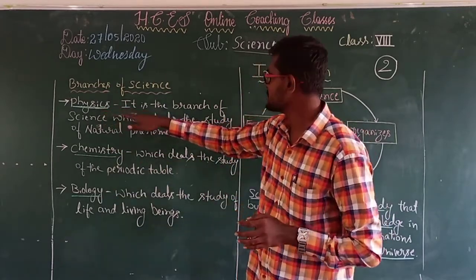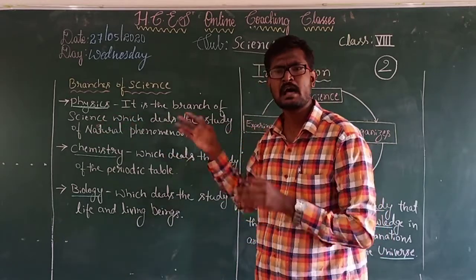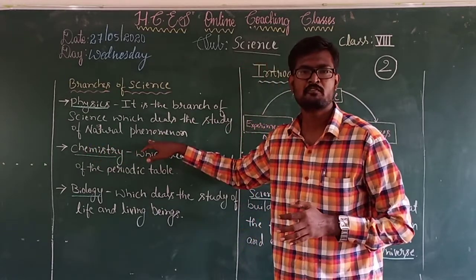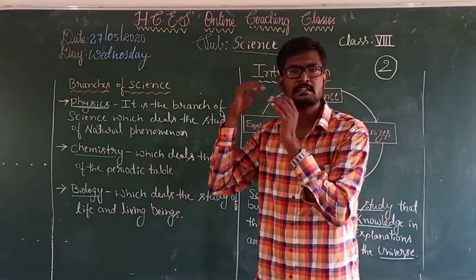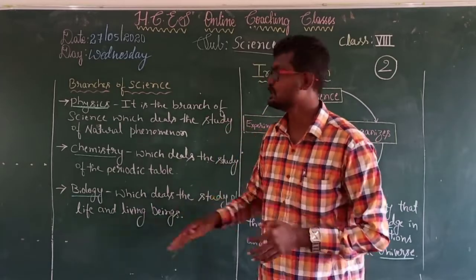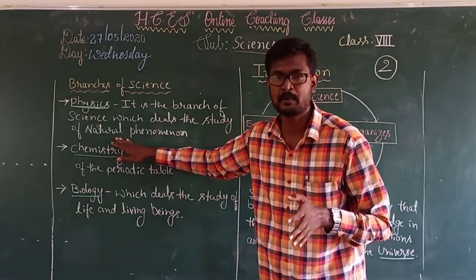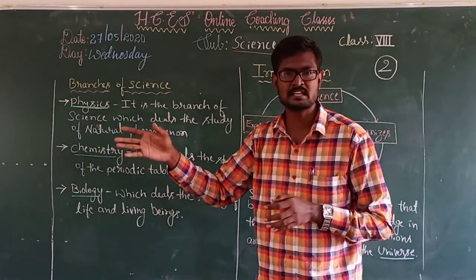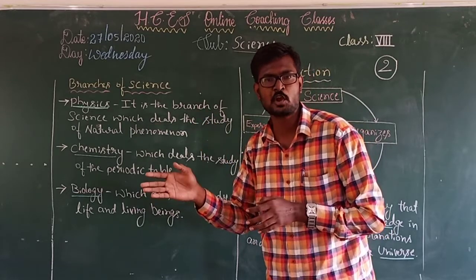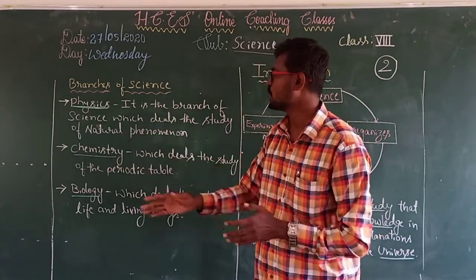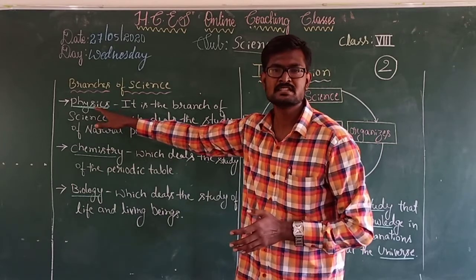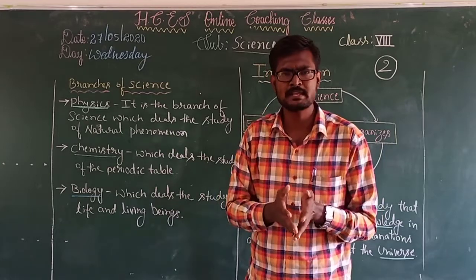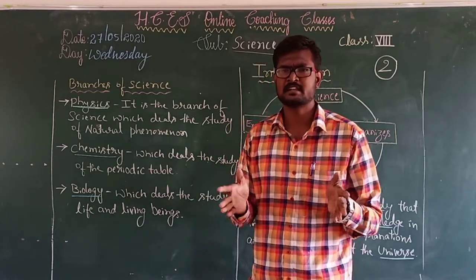Physics is the branch of science which deals with the study of natural phenomena. Physics is the study about natural phenomena — the best example is light. Light is a natural thing, and in order to learn natural phenomena like light, we need a branch called physics. In physics we have many sub-branches like optics, classical mechanics, etc.